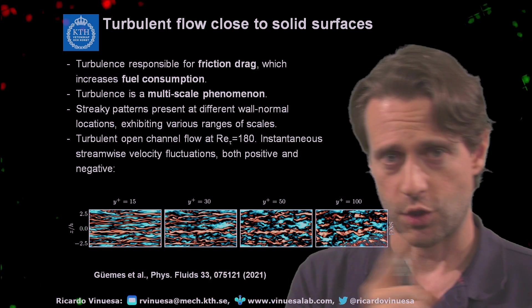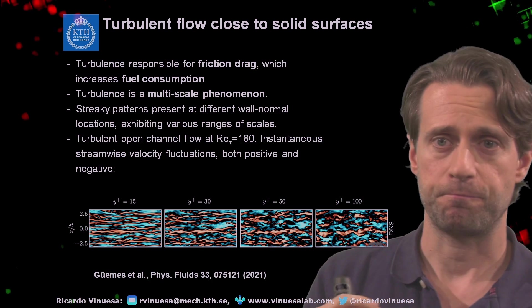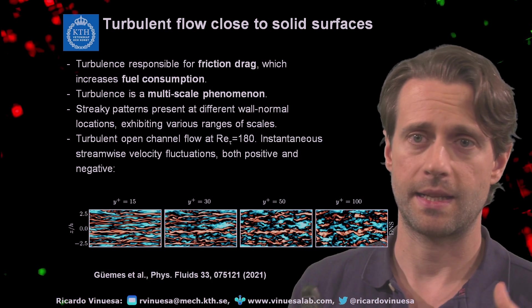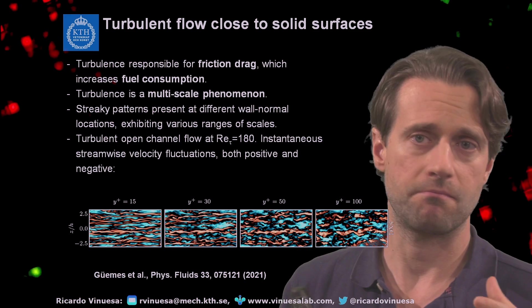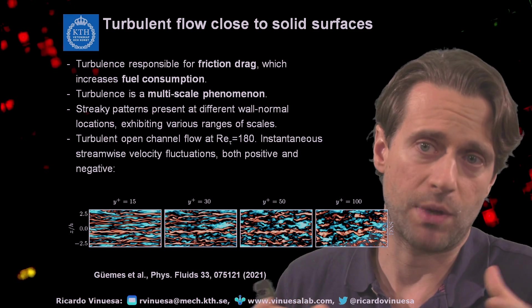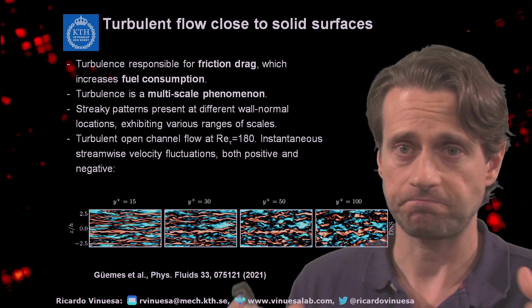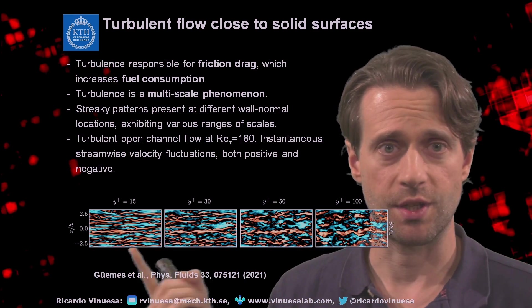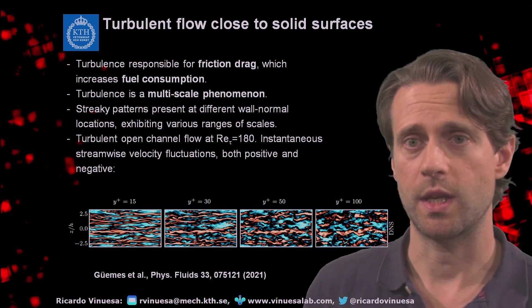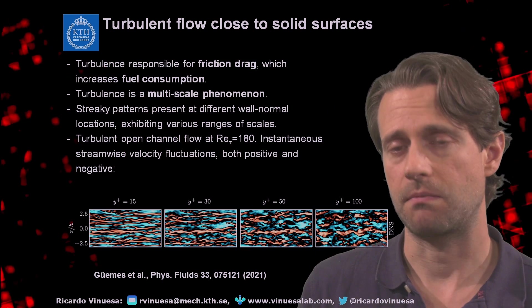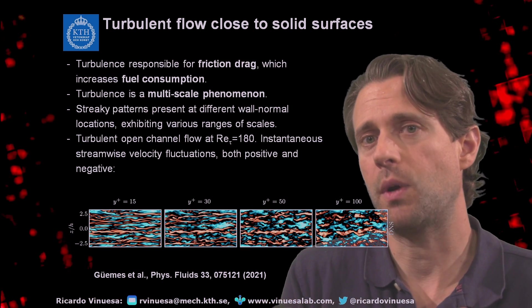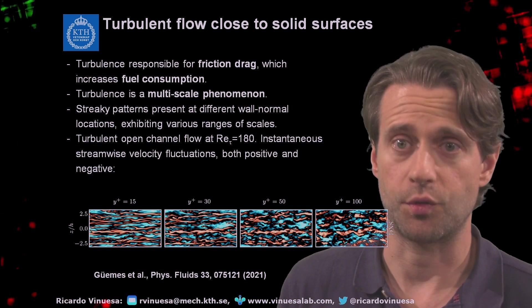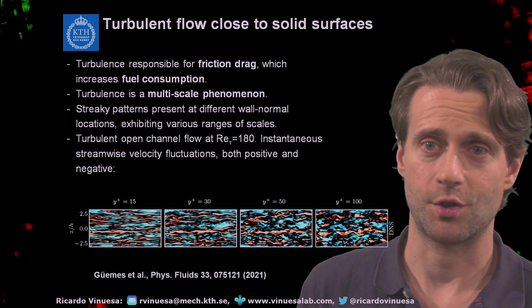And that really leads to an enhancement of fluctuations in different locations. So these streaky patterns are very characteristic of turbulence, and at y⁺ = 15, very close to the walls, we observe at low and moderate Reynolds numbers most of the production of turbulent kinetic energy.